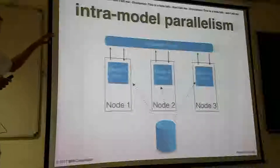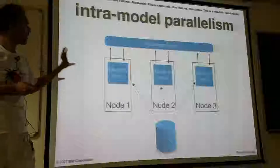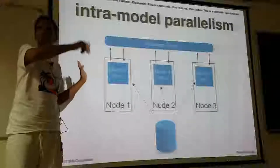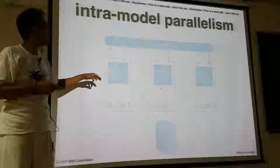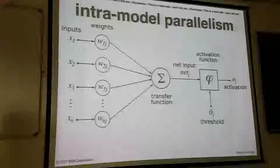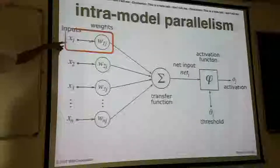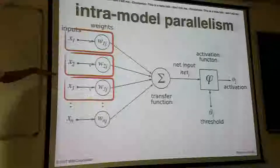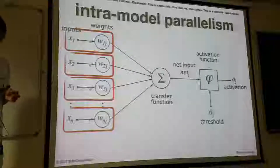There is another notion of intra-model parallelism where you can take the model apart — for example, if it doesn't fit into one single GPU, you can use multiple GPUs. A simple proof that you can partition the model is that you're computing h of type W, and those operations are independent of each other, so of course you can compute them in parallel.